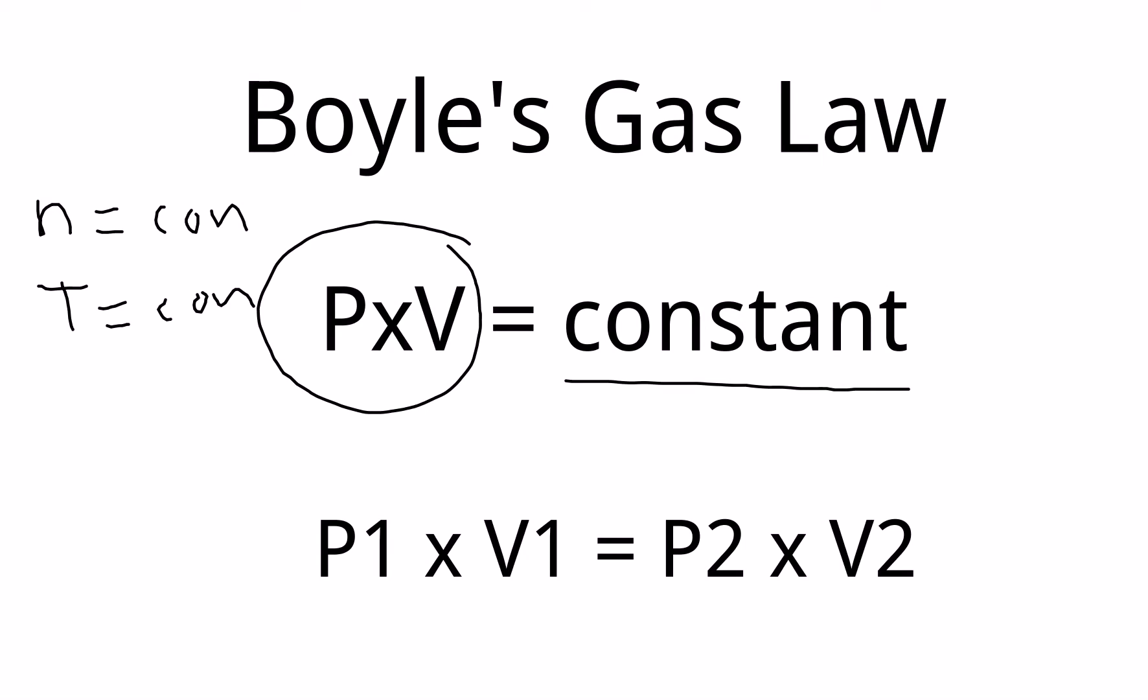So what we have is pressure times volume. They're in inverse relationship, and they will equal a constant given moles are constant and temperature is constant. And we're going to see that through all the simple gas laws, that there has to be some constants that are being held, and then others that can move,